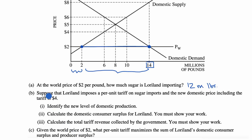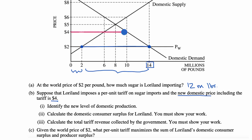Part B: suppose that Loreland imposes a per-unit tariff on sugar imports and the new domestic price, including the tariff, is $4. What is the new level of domestic production? At a price of $4, the domestic supply curve shows that domestic suppliers are willing to supply 6 million pounds. So the new level of domestic production is 6 million pounds.